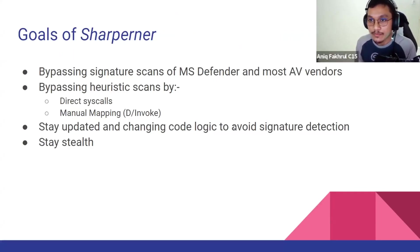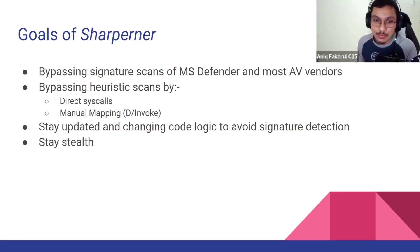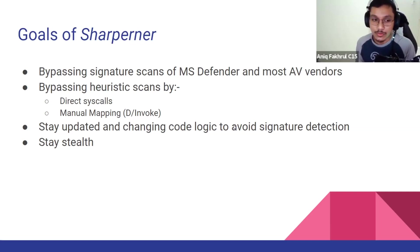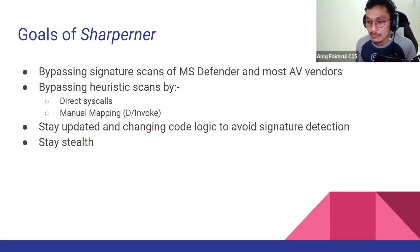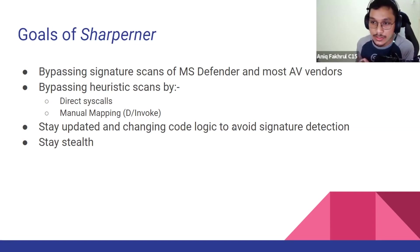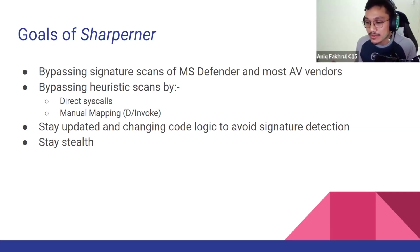What are my main goals when I develop Sharpener? The first one is to bypass signature scanning from Microsoft Defender and also most AV vendors. Most PE binaries or executables can be easily detected by signature — for example, through the use of function names. Sharpener bypasses this by randomizing all function names and also the function logic.